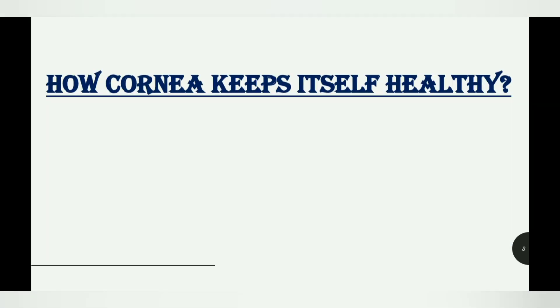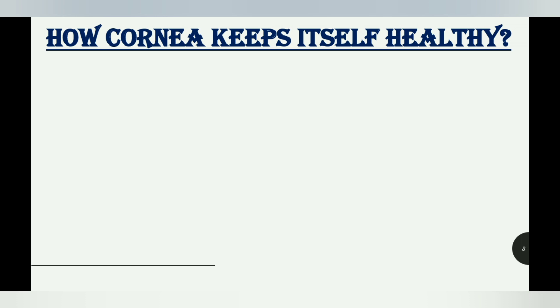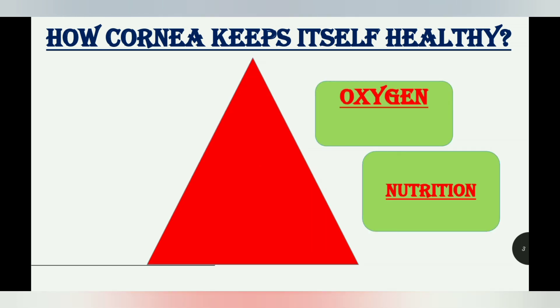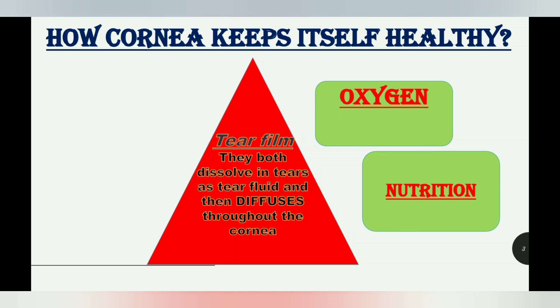The second question is: how does the cornea keep itself healthy? Like any living cell, the cornea needs oxygen and nutrition. The cornea gets its oxygen and nutrition via the tear film. The tear film contains tear fluids, in which oxygen and nutrition become dissolved.